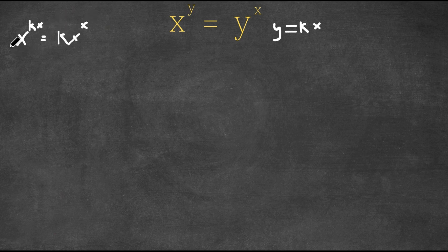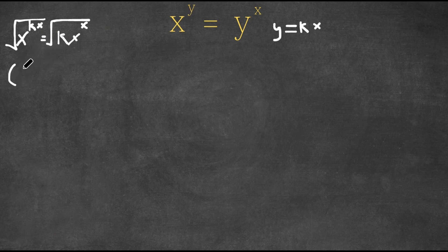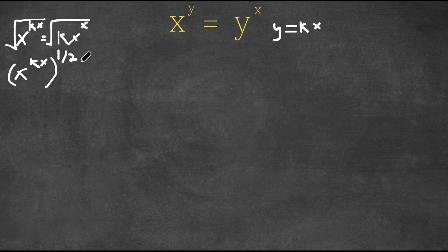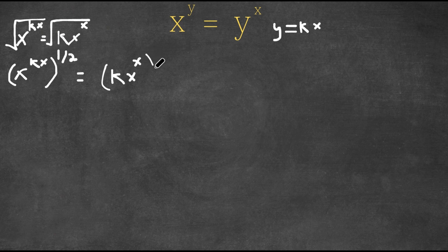Now I'm going to take the square root on both sides, which is the same thing as taking the power of one half on both sides. So this gives us x to the power of kx, to the power of one half, equals kx to the power of x to the power of one half.